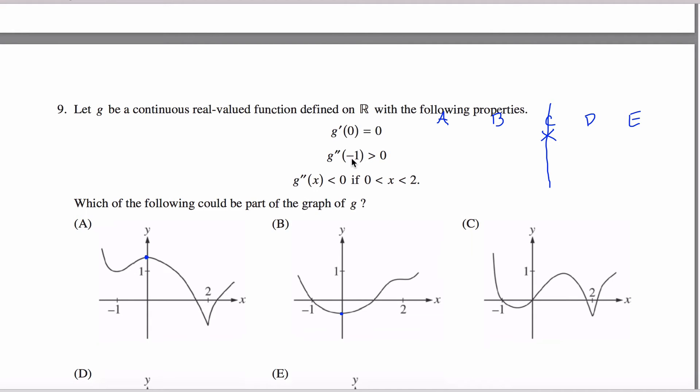G double prime of negative one is greater than zero. Okay, this is saying the second derivative which tells me concavity at negative one is supposed to be greater than zero. So my graph is concave up at negative one. Concave up, you're thinking a right side up bowl, whereas concave down, you're thinking an upside down bowl. So what I want to do is look at these at negative one.